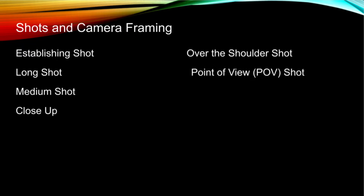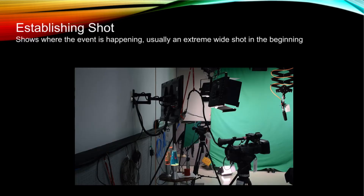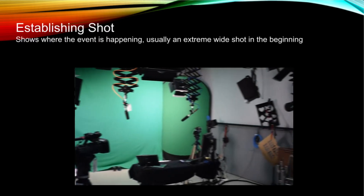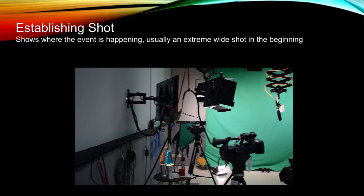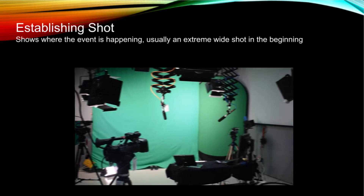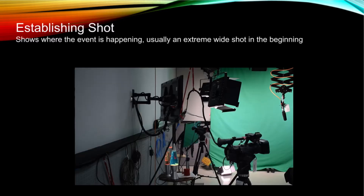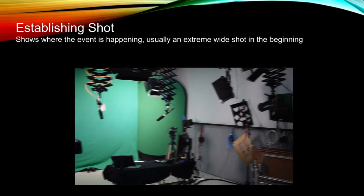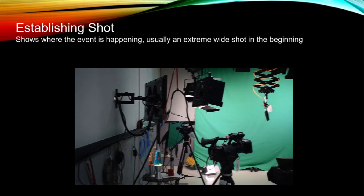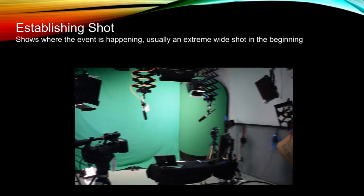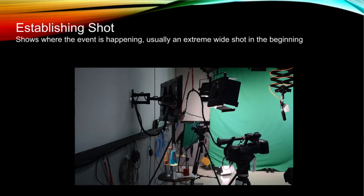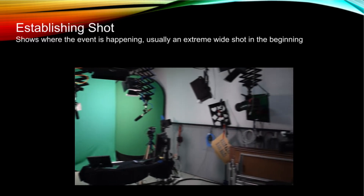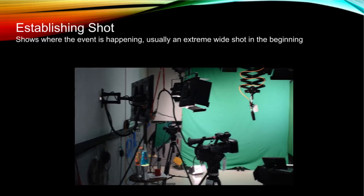Here we will talk about some of the most common shots. An establishing shot establishes the scene. It shows the setting and lets the audience know where your story is taking place. This makes it an extreme wide shot, because it shows a lot of things at once. So this shot in our marketing promo is an establishing shot, because it shows the whole lab, giving you an overall idea of where we are without going into too much detail. Establishing shots are usually at the beginning of the story and at the beginning of scene changes, so people know where you are and are not confused.